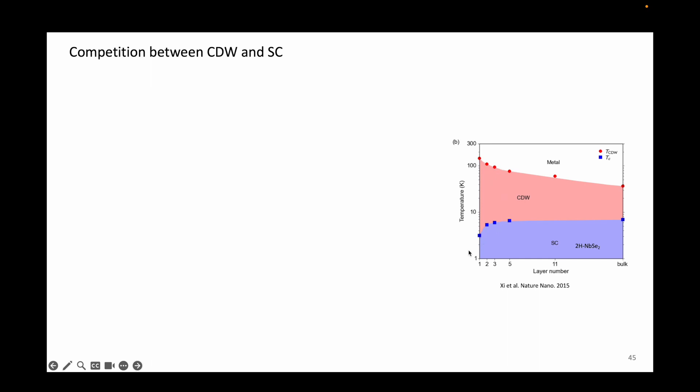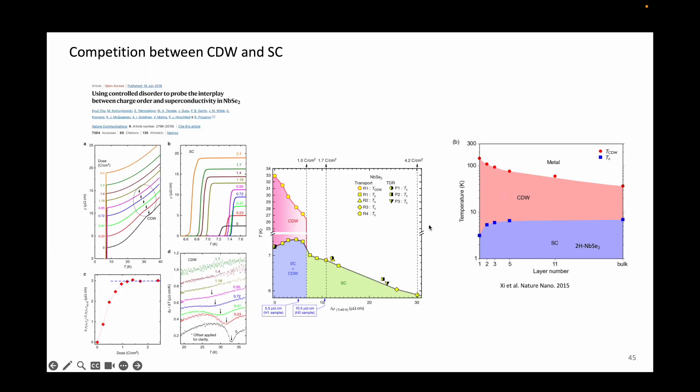This can also be tested by creating disorder in the system. In this paper on the left, the authors irradiated the sample of niobium diselenide using high-energy electrons with controlled doses and measured the charge density wave and superconducting transitions.